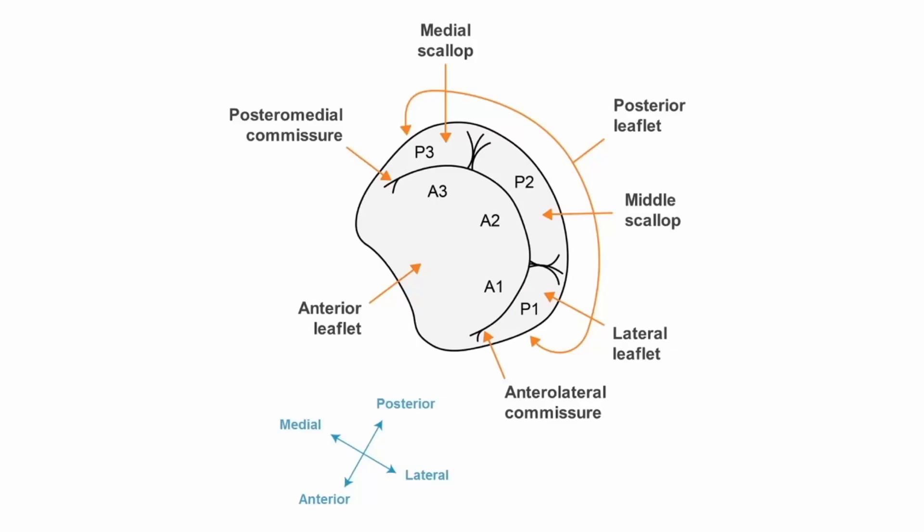The main body of the mitral valve consists of two leaflets, an anterior leaflet and a posterior leaflet that lie within a mitral valve annulus.